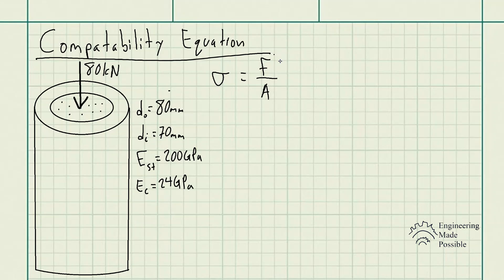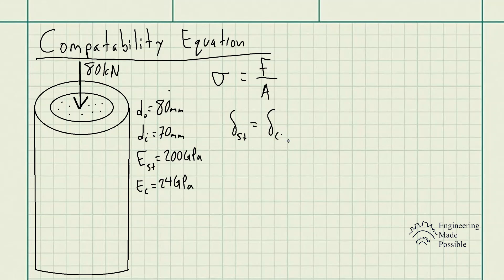Since we're dealing with a composite structure, each material will experience a different force, and each has a different cross-sectional area. We use the compatibility equation, which states that the deformation of the steel equals the deformation of the concrete, because they work as one structure — if one deforms, the other must deform the same amount.